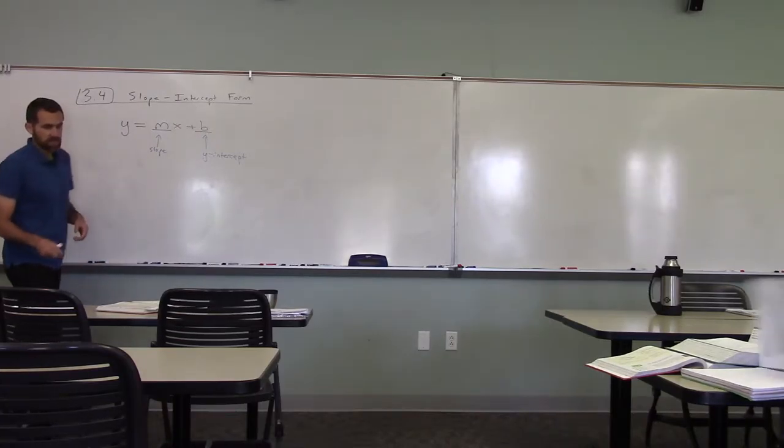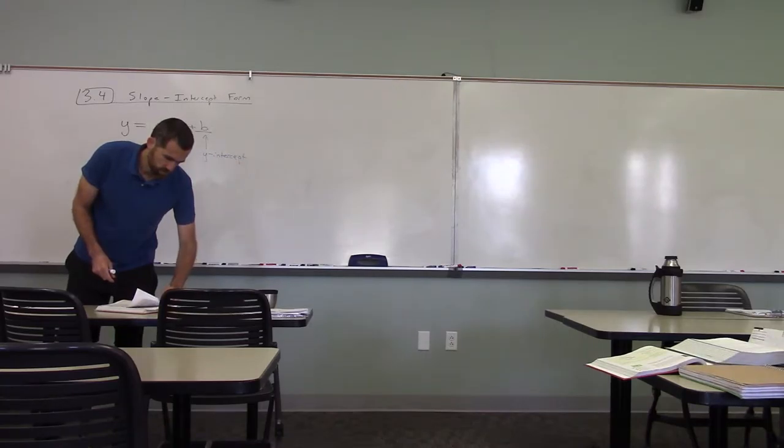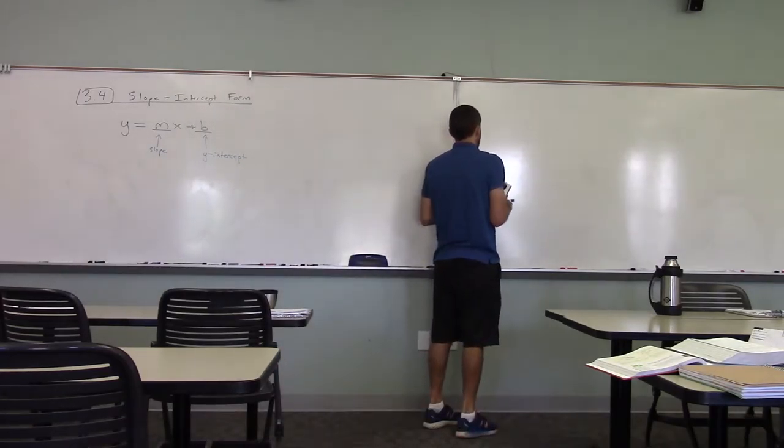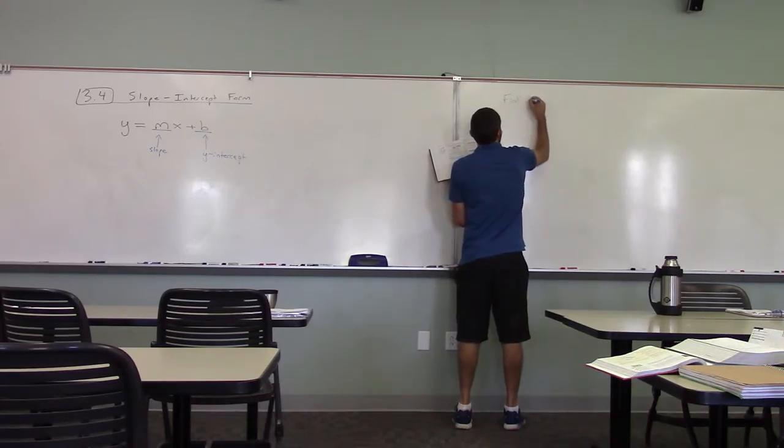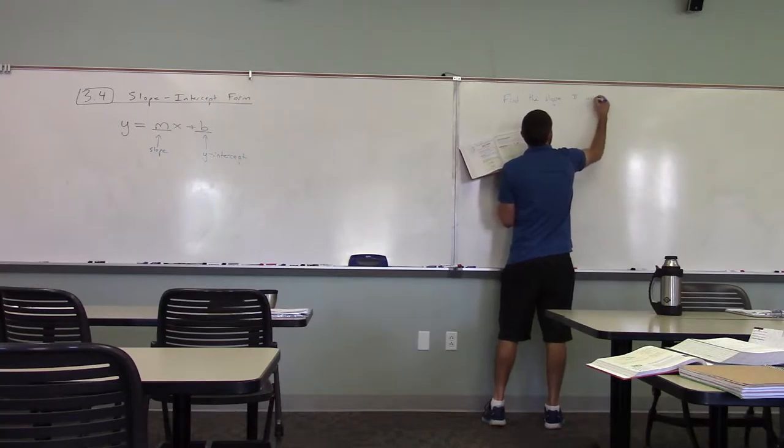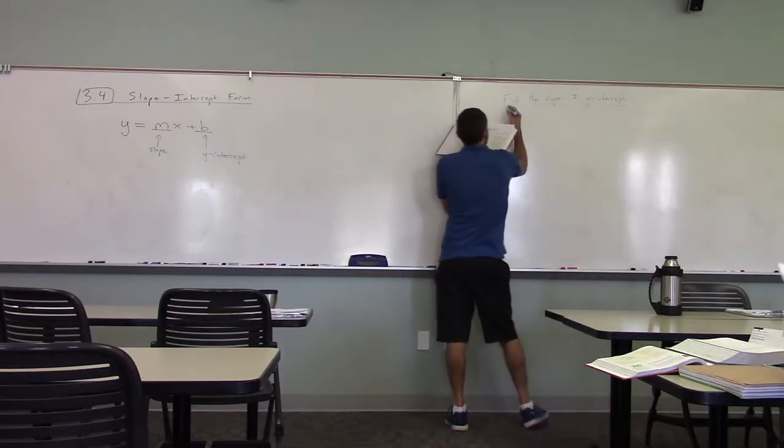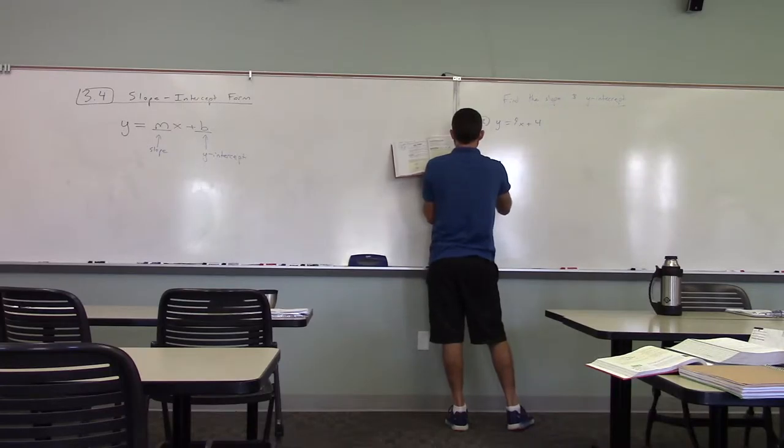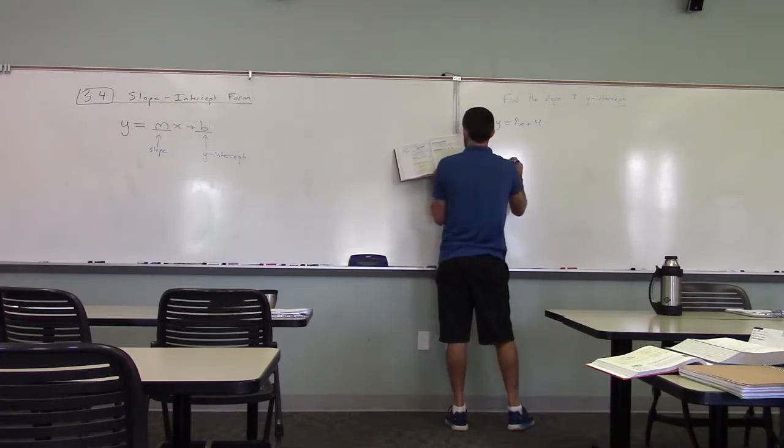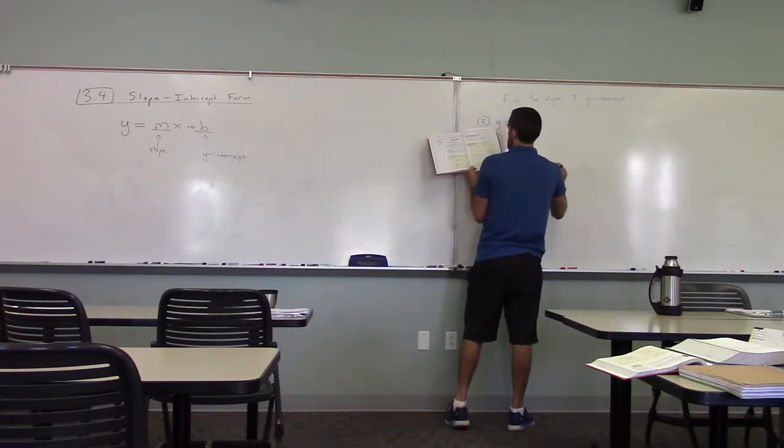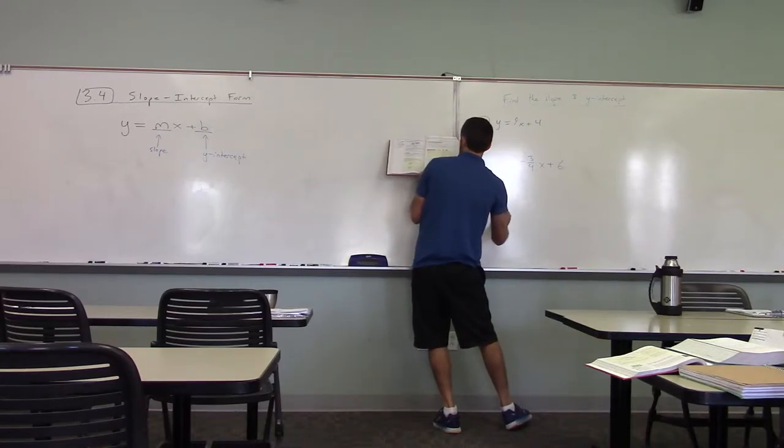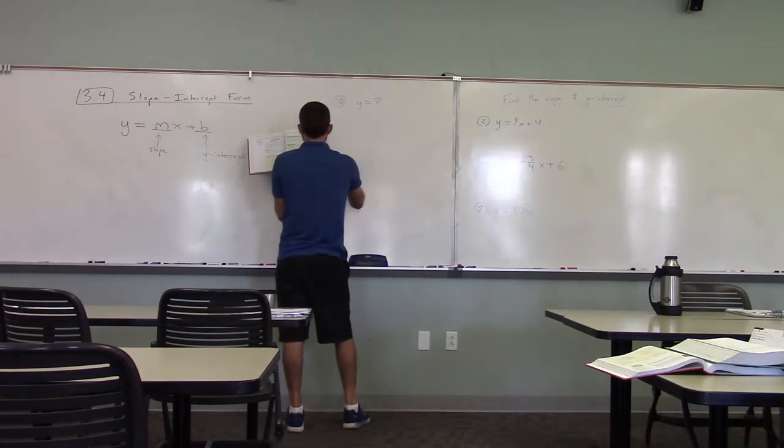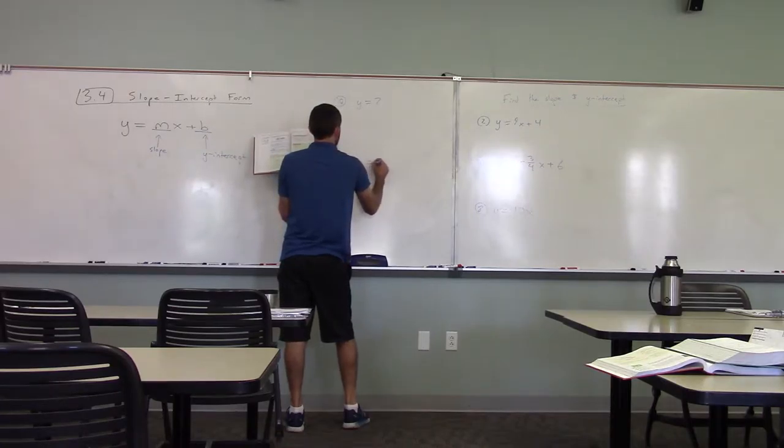So, examples. Let's just do a couple examples here. Find the slope and y-intercept. Number two: y equals 9x plus 4. Number four: y equals negative three fourths x plus 6. Number eight: y equals 10x. Then, kind of going backwards here. Number 10: y equals 7. And number 12: y equals 5 minus x.